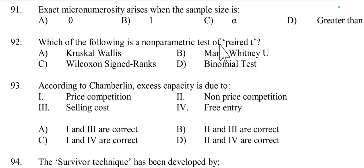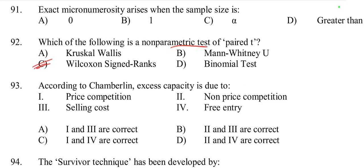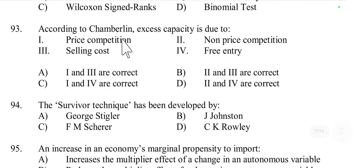Question number 92: Which of the following is a non-parametric test of the paired t-test? The right option is C — the Wilcoxon signed-rank test. This test is used for comparing two related samples or matched pairs, similar to how the paired t-test compares two means, but without assuming a normal distribution. So this is a non-parametric test.